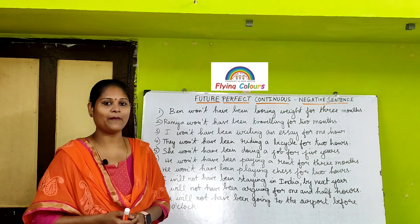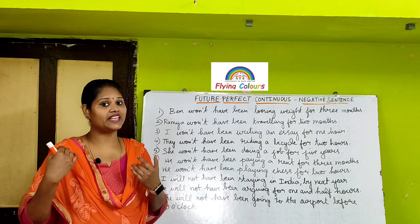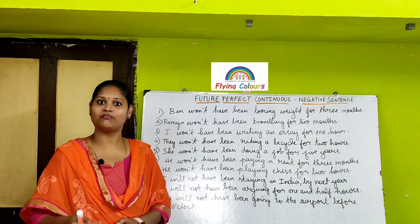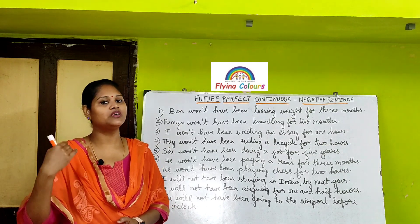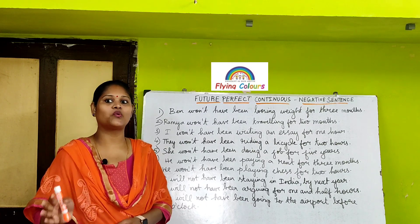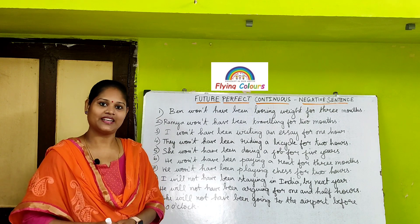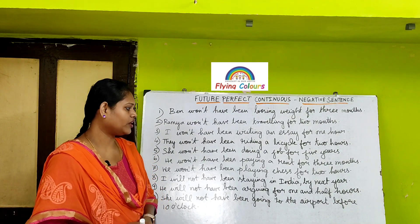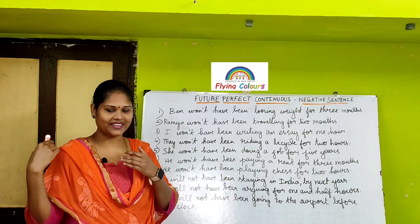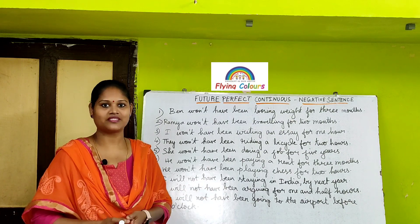I will not have been staying in India by next year. That means I started staying in India in the past, continuing in the present, but won't continue staying in the future by next year — meaning by next year I won't be in India. I will not have been arguing for one and a half hours — I started arguing in the past and it continues in the present but won't continue in the future for one and a half hours.